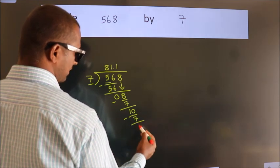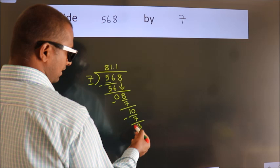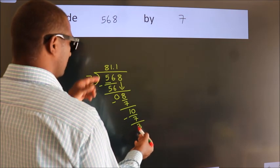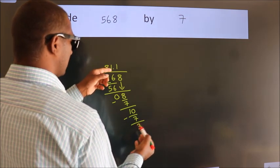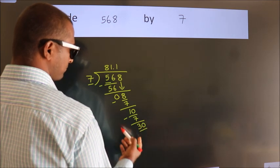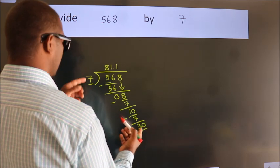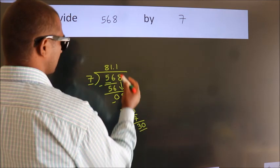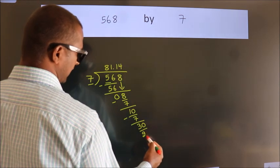Now we subtract, we get 3. After this, we already have the decimal, so directly take 0. So 30. A number close to 30 in the 7 table is 7 fours, 28.